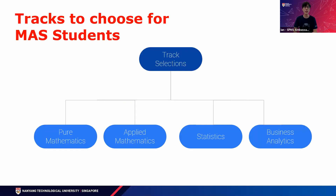When you join us for Mathematical Sciences, you can choose from four tracks. These four tracks are all unique and different in their own way, catering to each student's interests. You have Pure Mathematics, Applied Mathematics, Statistics, as well as Business Analytics. You can choose these tracks after your year two.